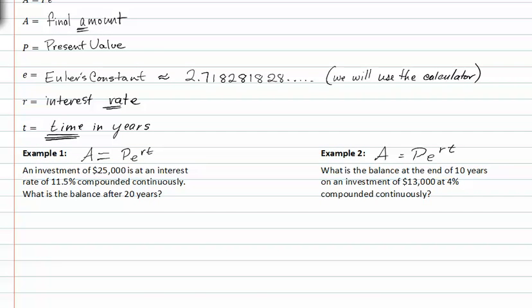So in example one, an investment of twenty-five thousand is at an interest rate of eleven point five percent. A is what we're looking for, P is the amount that was invested, E is the Euler's constant. R is 0.115, the percentage rate, and it's compounded continuously. Since it's going to be in this investment for twenty years, T is twenty.